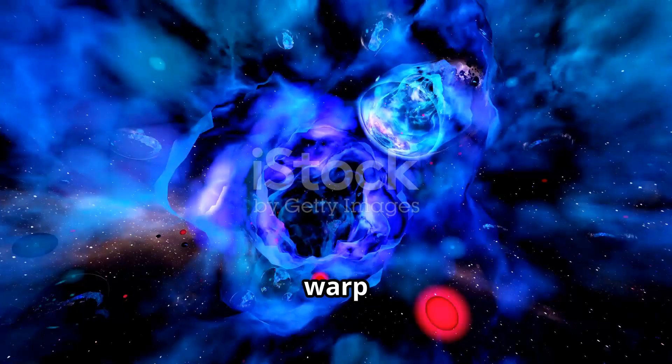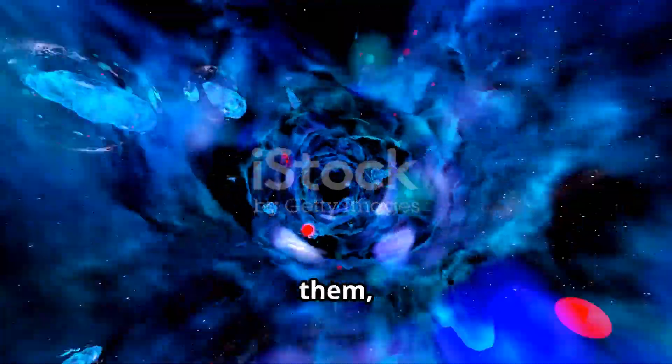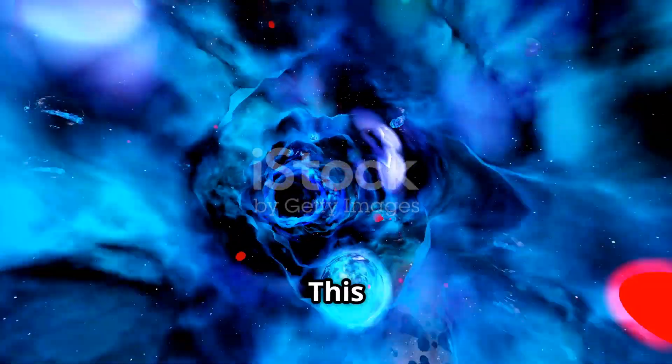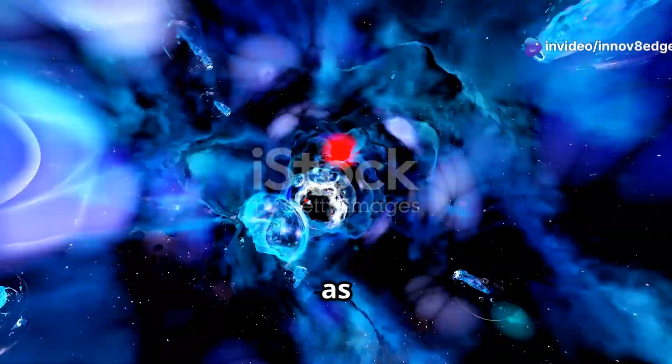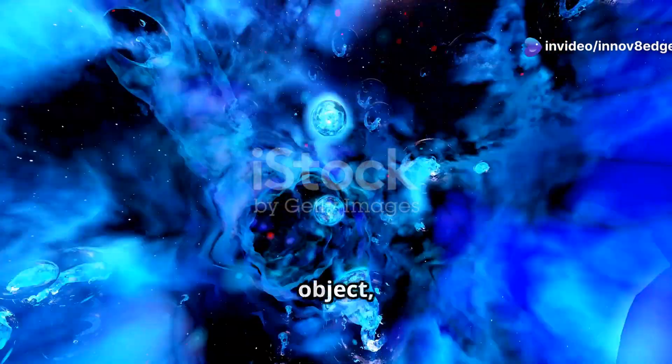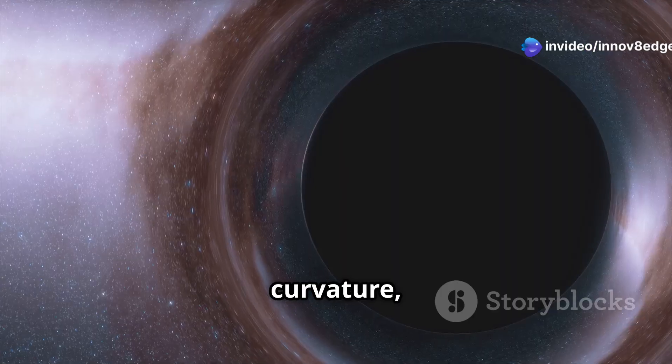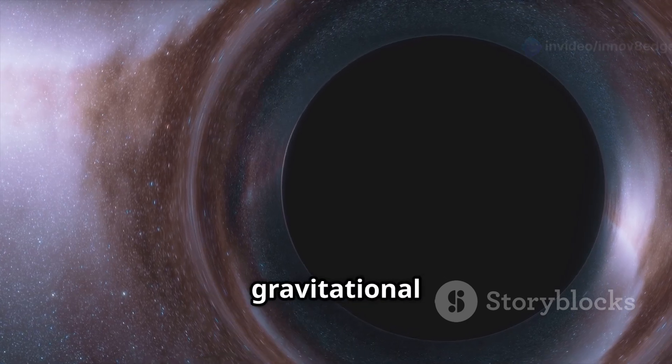Massive objects warp the fabric of space-time around them, much like a bowling ball placed on a trampoline. This warping effect is what we perceive as gravity. The more massive the object, the greater the curvature, and hence, the stronger the gravitational pull.